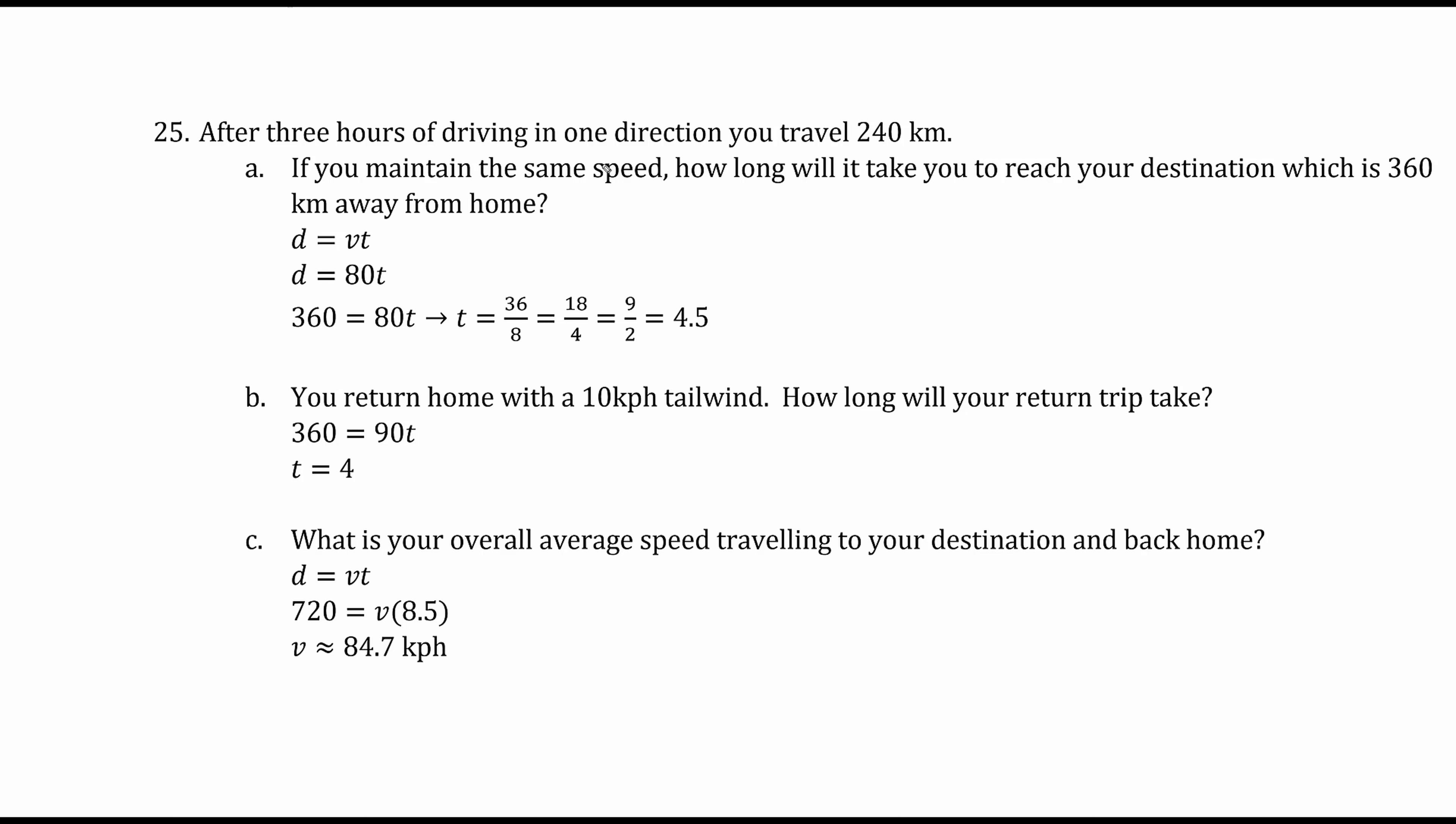After three hours of driving in one direction you travel 240 kilometers. The classic formula is distance equals velocity times time. Given the distance is 240 and the time is three hours, the velocity, dividing both sides by three, is eighty kilometers per hour.